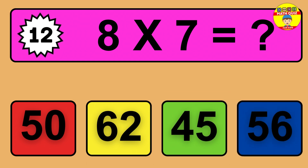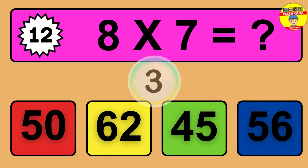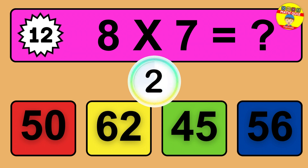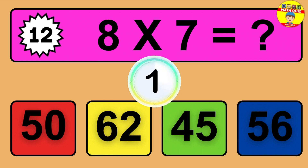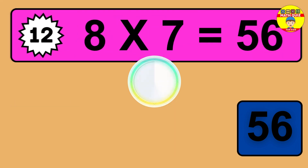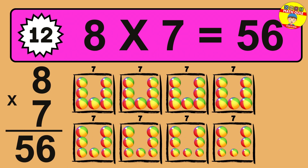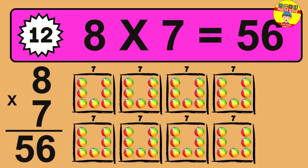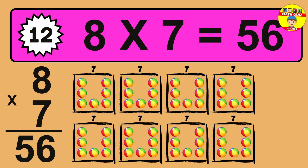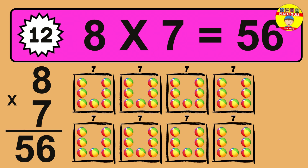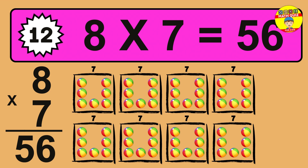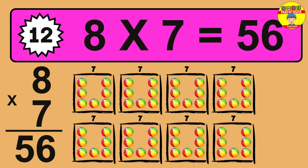Question 12. 8 times 7 equals what? The answer is 8 times 7 is 56. To calculate, we have 8 groups with 7 balls each one. So how many balls do we have? 56 balls.